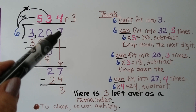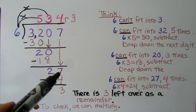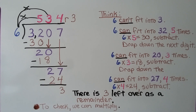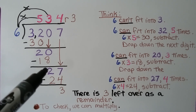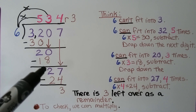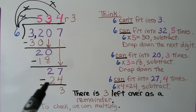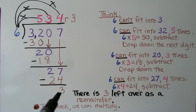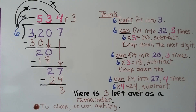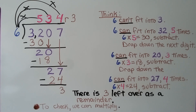We do our subtraction, we get a 2, and now it's the 7's turn to come down. 6 can fit into 27 four times because 6 times 4 is 24. So 6 times 4 is equal to 24. We do our subtraction and we have a 3. That means we have a remainder of 3 that 6 cannot fit into — there is 3 left over as a remainder.